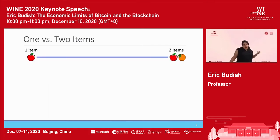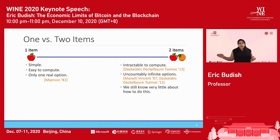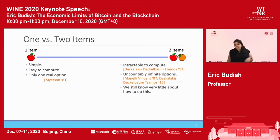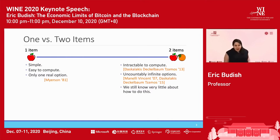Going from one item to two items, there's a huge gap. For one item, it's simple, easy to compute, and there's only one real option offered to the buyer. But with two items, it can be intractable to compute and there can be uncountably infinite options. For example, I could offer lottery tickets with varying probabilities for the apple and orange, and vary those probabilities and prices to create uncountably infinite different options. We still know very little about how to find the optimal mechanism or what it looks like.